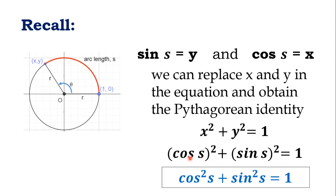Rewriting this, we can have it as cosine squared S plus sine squared S equals 1. This is now the Pythagorean identity of a unit circle.